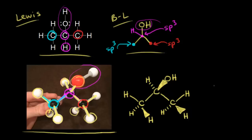We've drawn everything out. Notice when you have a tetrahedral, sp3 hybridized carbon, you have this pattern: two bonds in the plane of the paper, one wedge, and one dash. That's how we represent tetrahedral geometry around sp3 hybridized carbons.